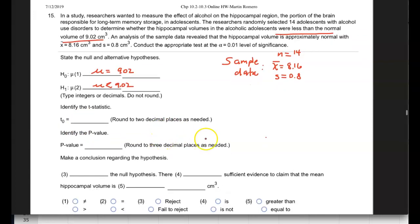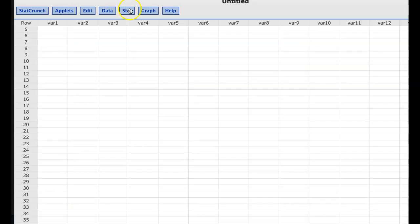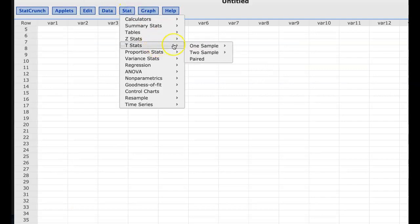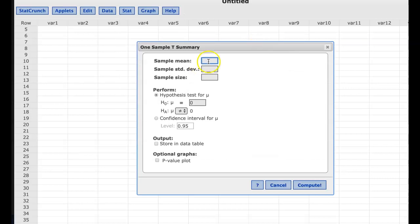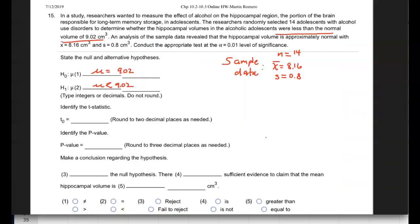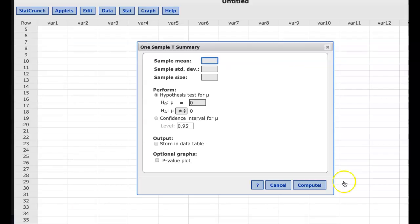To identify a test statistic, that's going to come directly from StatCrunch. Remember, we're going to be using T Stats one sample with summary, and we have the sample data. Let me go back to that. We have sample data, mean and standard deviation, 8.16 and 0.8.